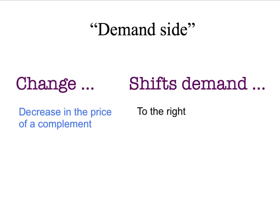Alternatively, if there's a decrease in the price of a complement, that will tend to shift demand to the right. For example, if butter and bread are complements — consumers tend to have them together — and there's a decrease in the price of bread, then people will tend to have more bread and they'll want to buy more butter. So at any price of butter, the decrease in the price of bread will lead people to want to buy more butter — a rightward shift in the demand curve for butter.